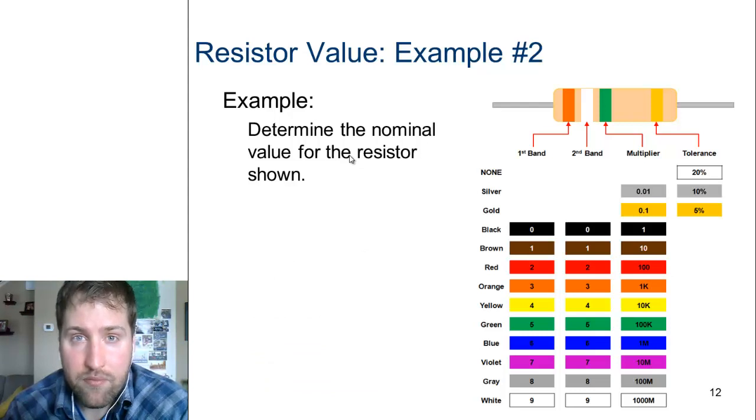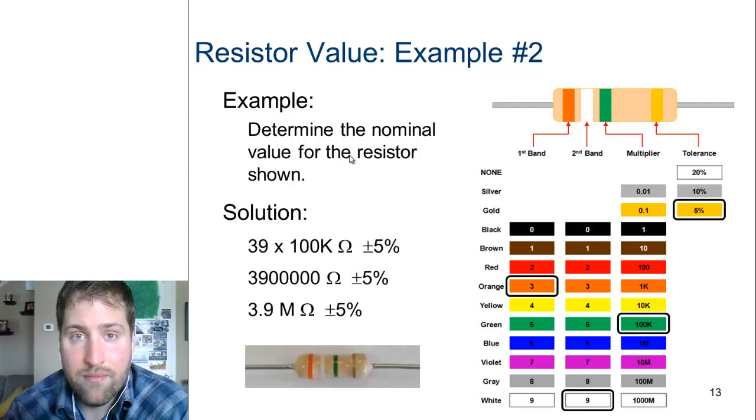For the sake of this example, looking at example two, before I explain this one, take a minute and in your notes predict what is the resistance of this resistor. You can see the colors are orange, white, and green with the multiplier, and a tolerance with gold. Give yourself a couple minutes or a minute - try this example and we'll check it together.